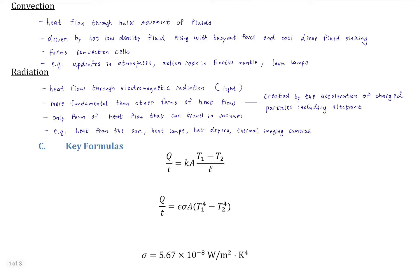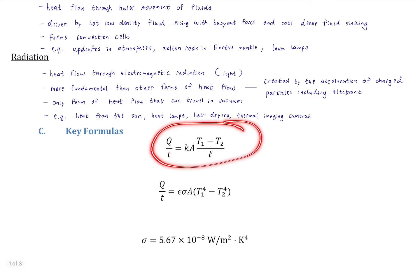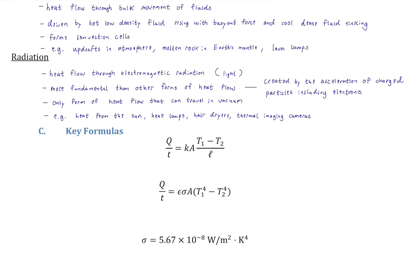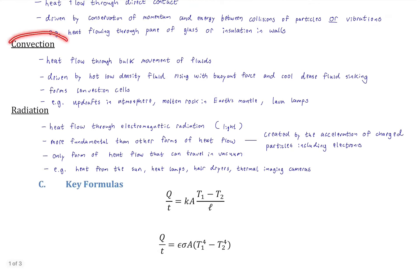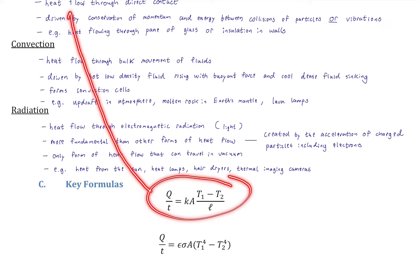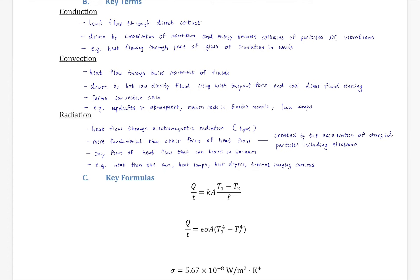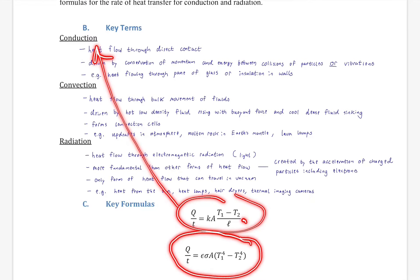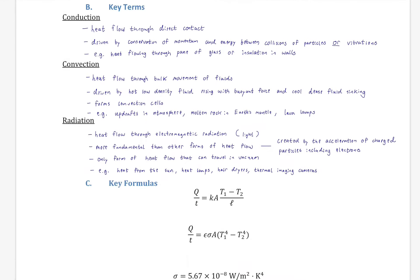Those are the three mechanisms of heat flow, and there are two equations — one for conduction and one for radiation. Convection has no simple formula in this class; quantifying it is too complicated. Let's look at both equations.